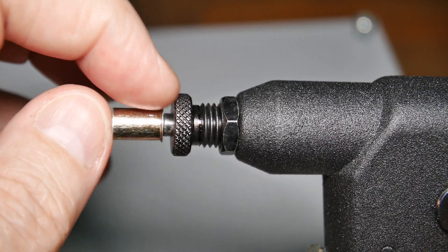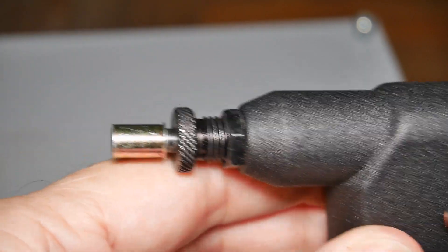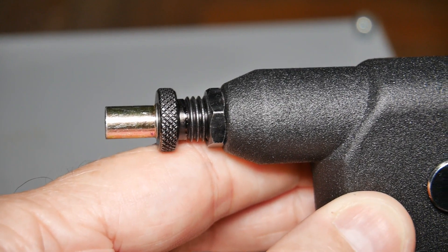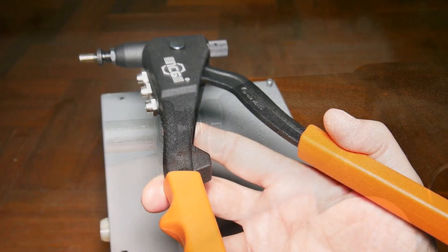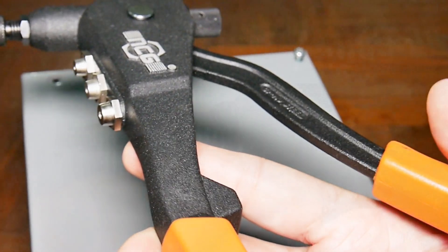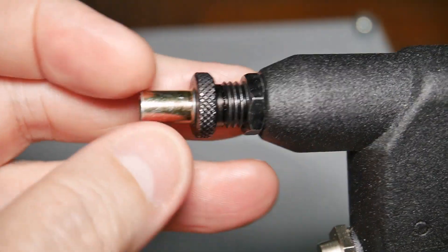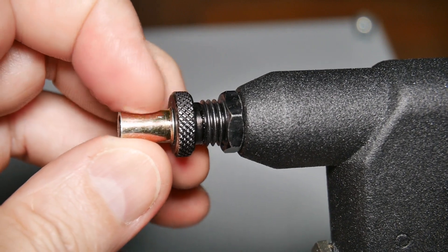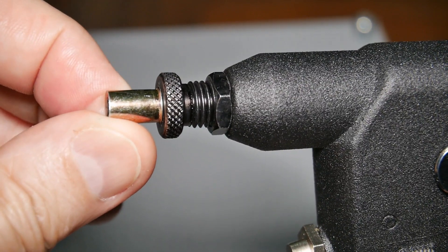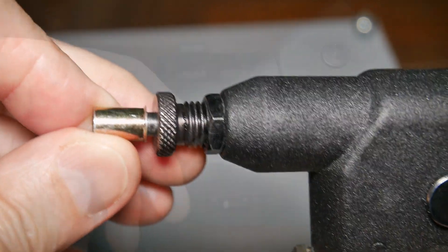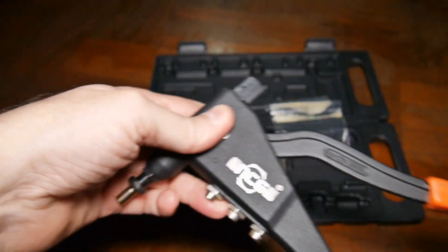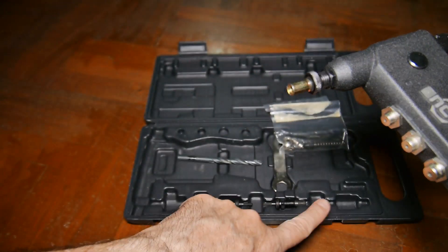And normally I would thread this tight up against this. But I want to show you that when I squeeze the handle, it pulls that back in there. And that is what is going to crush the insert and form that collar around it. As you can see, the tool is not very much to it. This particular one will do three different sizes.